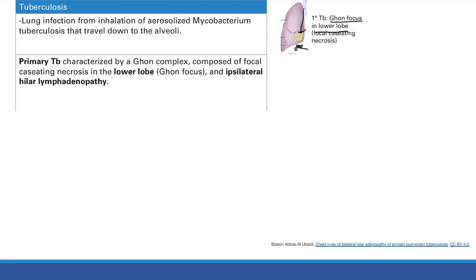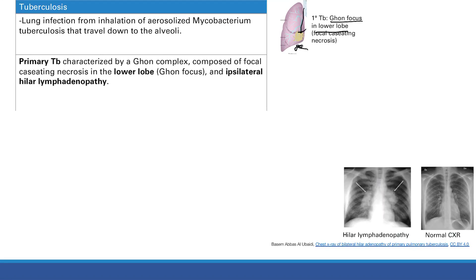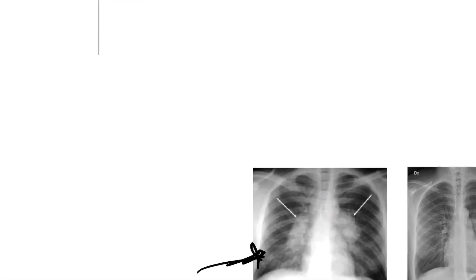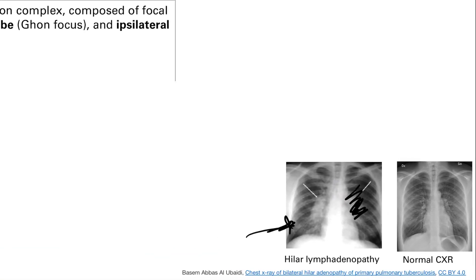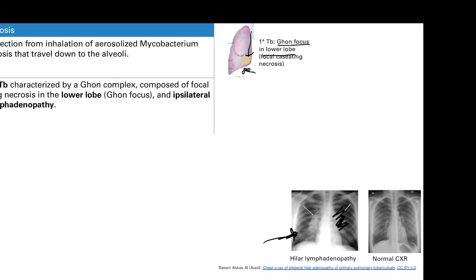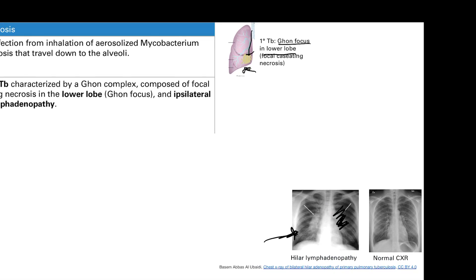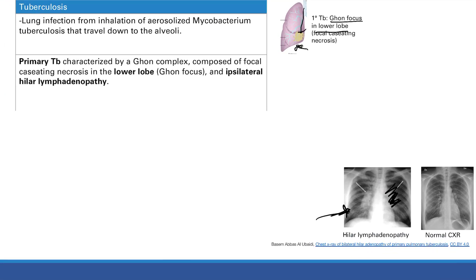You also get ipsilateral hilar lymphadenopathy with primary TB. If you see ipsilateral lymphadenopathy together with the Ghon focus, that combination is called the Ghon complex, and that is the characteristic finding of primary TB.